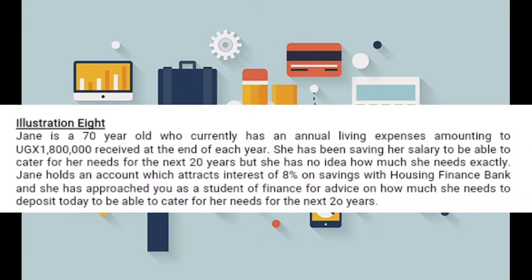Let's look at an example. Jen is a 70-year-old who currently has annual living expenses amounting to 1,800,000, received at the end of each year — that is the annuity. She has been saving her salary to cater for her needs for the next 20 years, so n equals 20 years, but she has no idea how much she needs exactly. Jen holds an account which earns interest of 8 percent on savings.